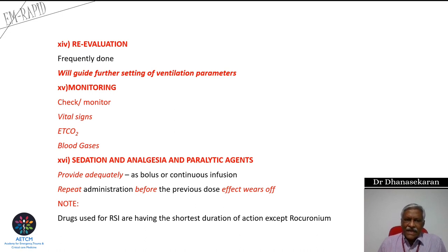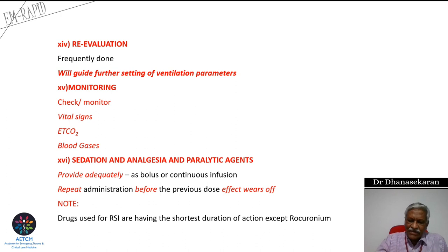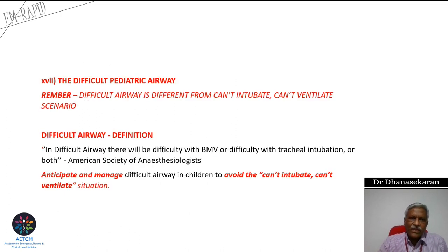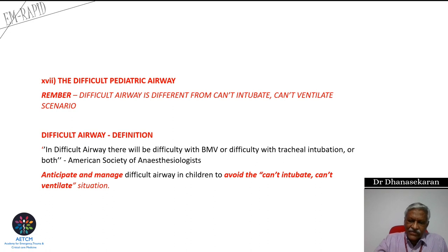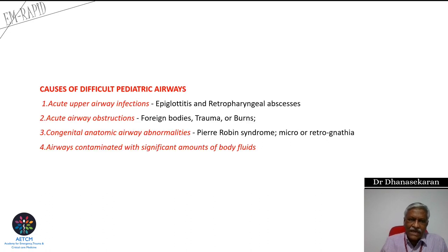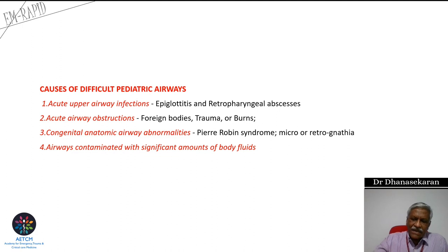Sedative, analgesic, and paralytic agents should be repeated before the effect of the previous dose wears out; sometimes given as an infusion. Difficult airway management must be assessed and anticipated well in advance. Causes of difficult airways in pediatrics include upper airway infection, acute airway obstruction, congenital anatomical airway abnormalities like Pierre-Robin syndrome, micrognathia, or retrognathia.